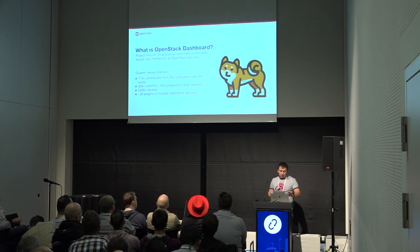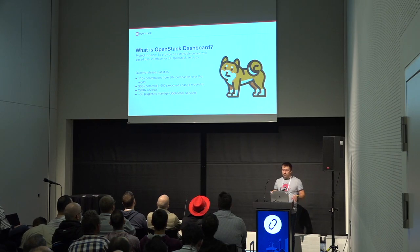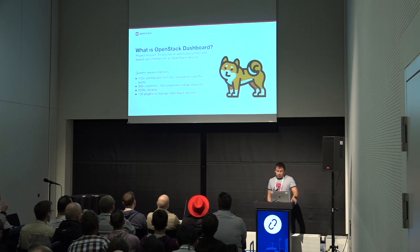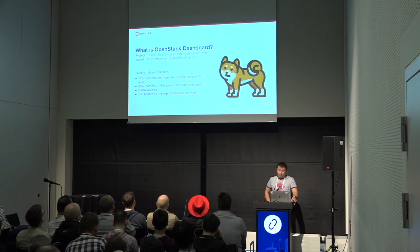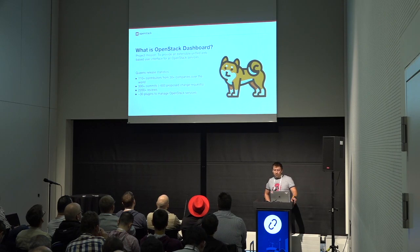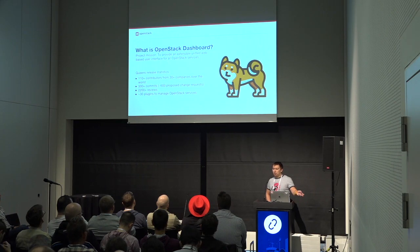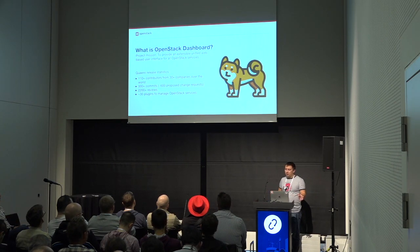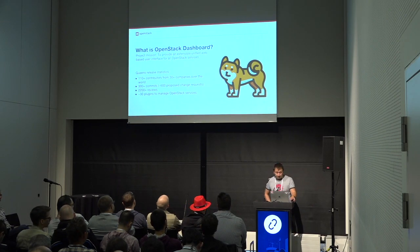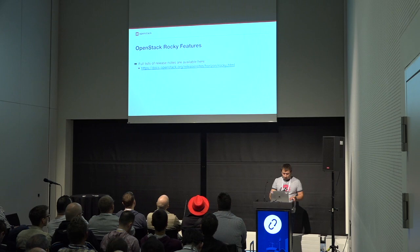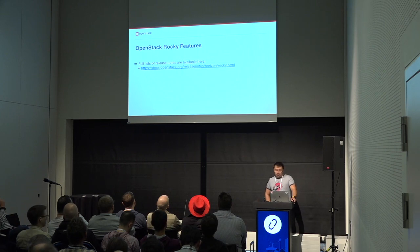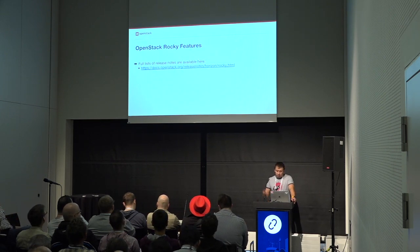This statistic is from the Rocky release. We got a lot of contributors from 30 companies, a lot of commits, reviews, and plugins for almost all OpenStack components — like Heat, Ironic, Trove, and others. All Rocky features we implemented can be found in our release notes, but I want to highlight some of them.